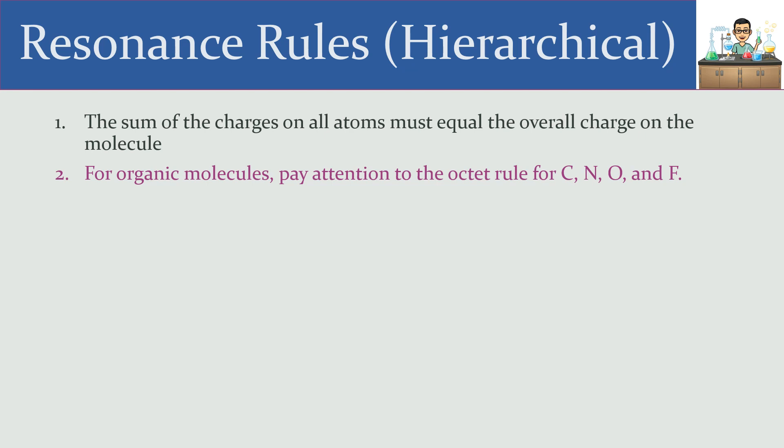Especially for organic molecules, you want to pay attention to the octet rule, or in other words, having eight valence electrons around carbon, nitrogen, oxygen, and fluorine. The reason I'm only including those four atoms is because those are the ones that you really want to adhere to the octet rule for.